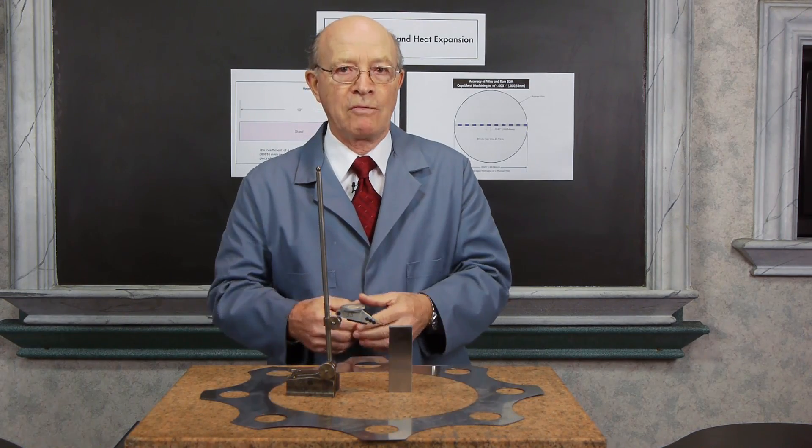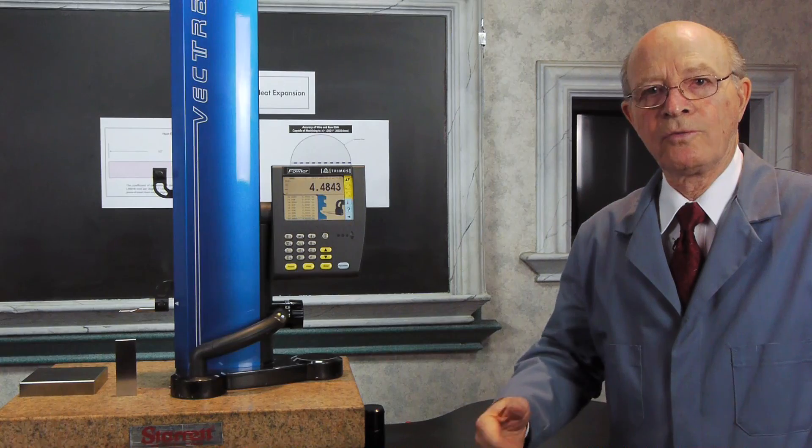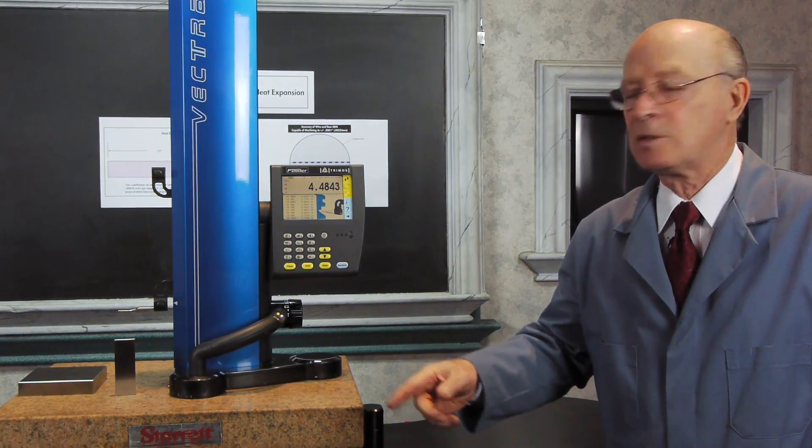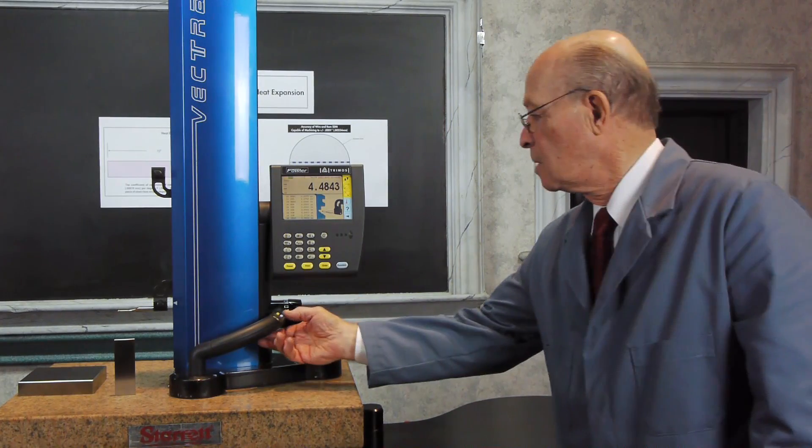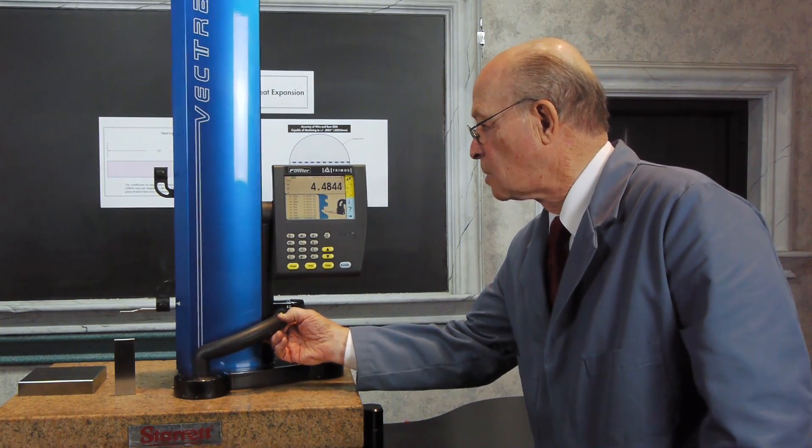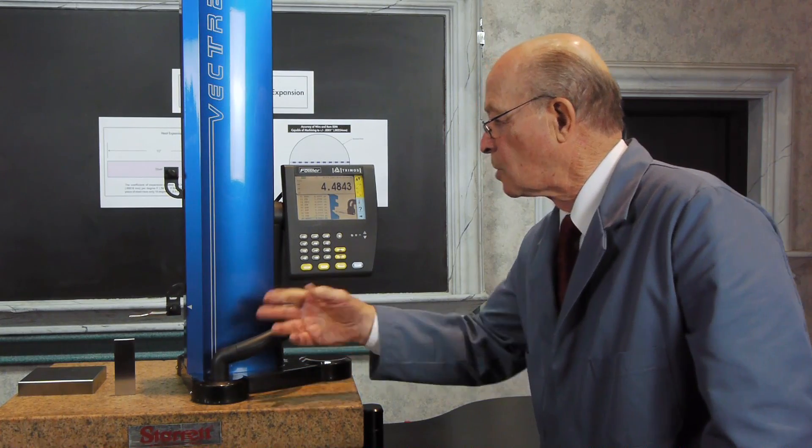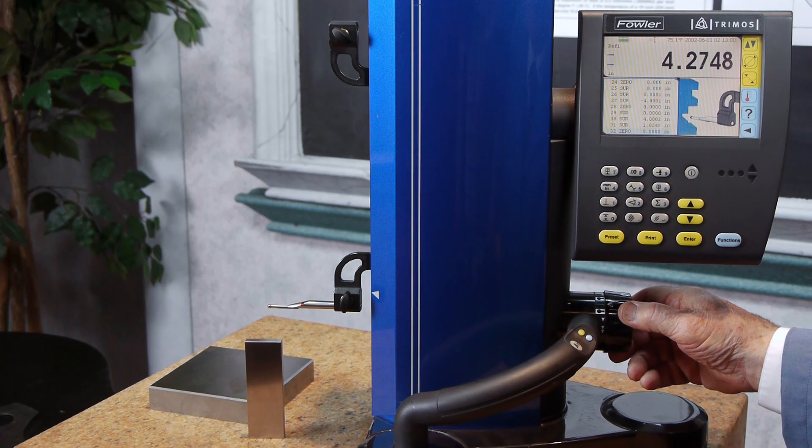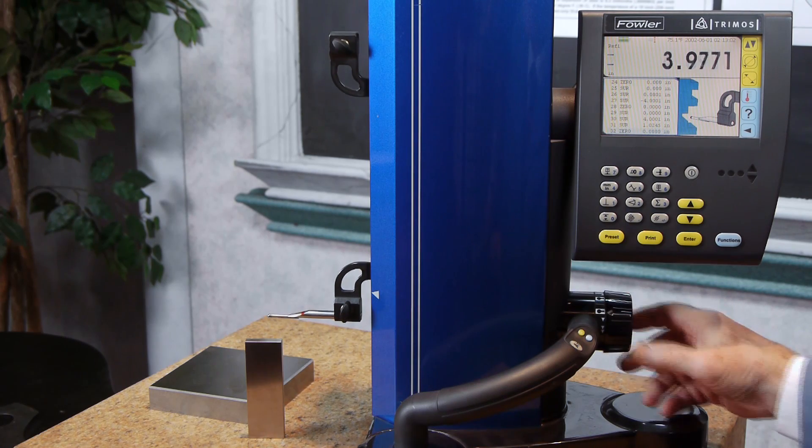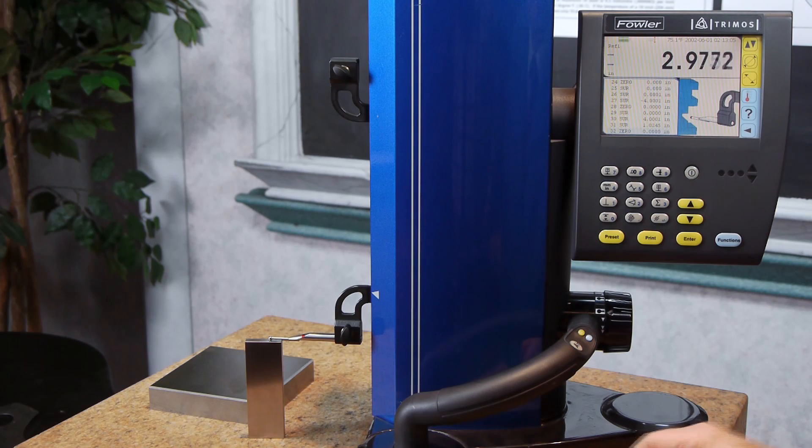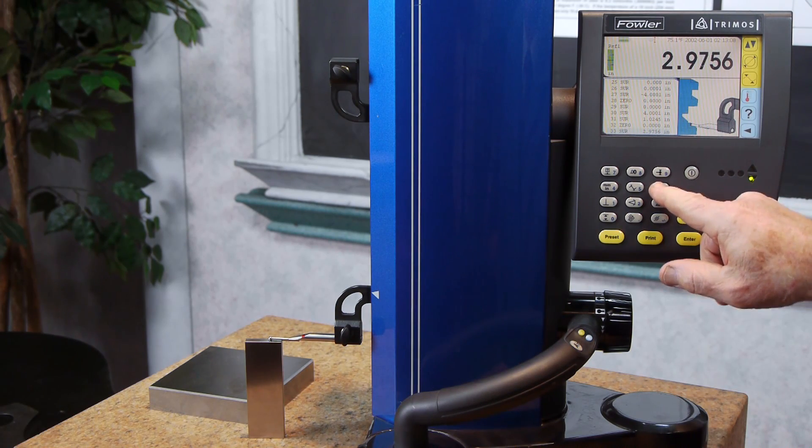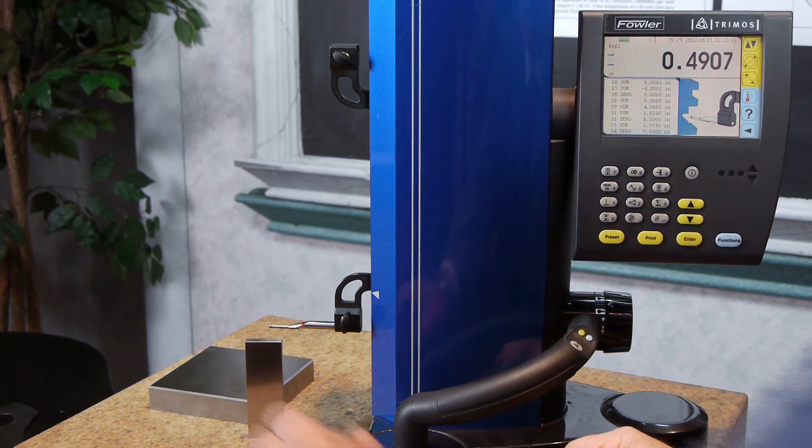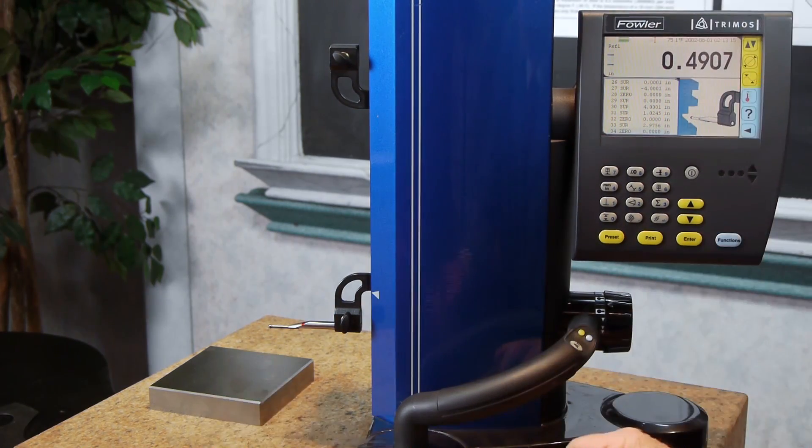This is a digital height gauge that we took from our inspection department, and we're going to show you what happens with heat expansion with that 4-inch gauge block. There's a button that says air, and it puts air underneath so we can easily move this, and let's take a close look at what happens. I'm going to lower it down on the 4-inch gauge block and zero it out. Zero it out, raise it up, and I'm going to take this gauge block away from here, and I'm going to put it within my hands.